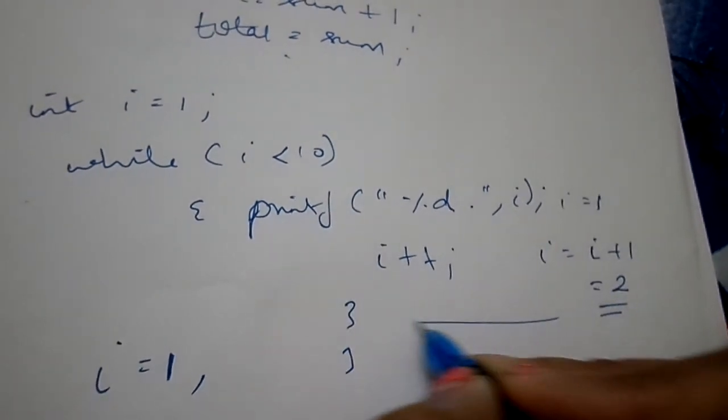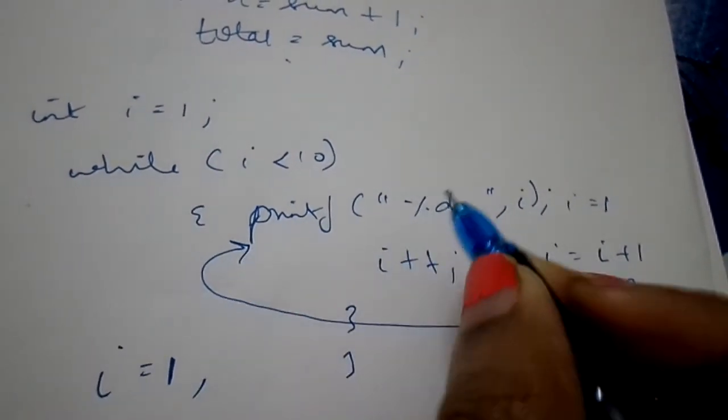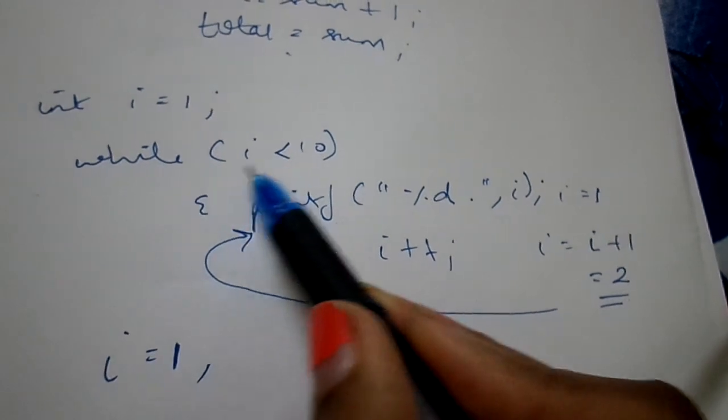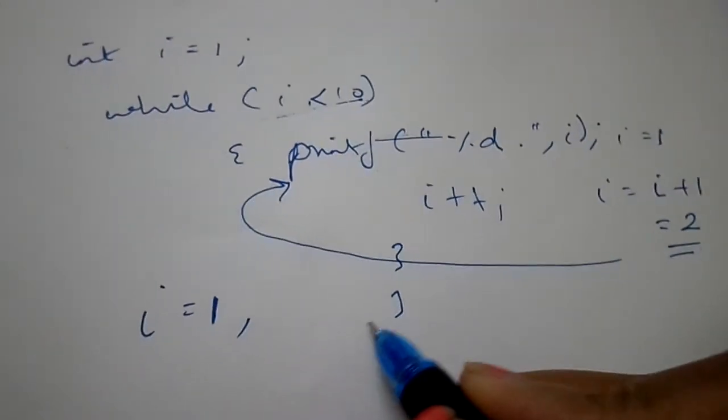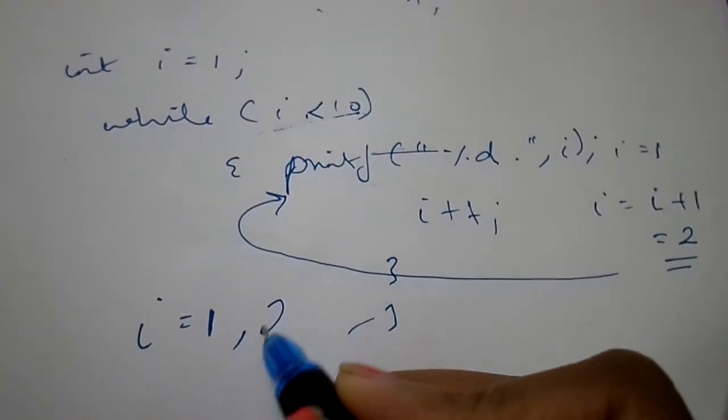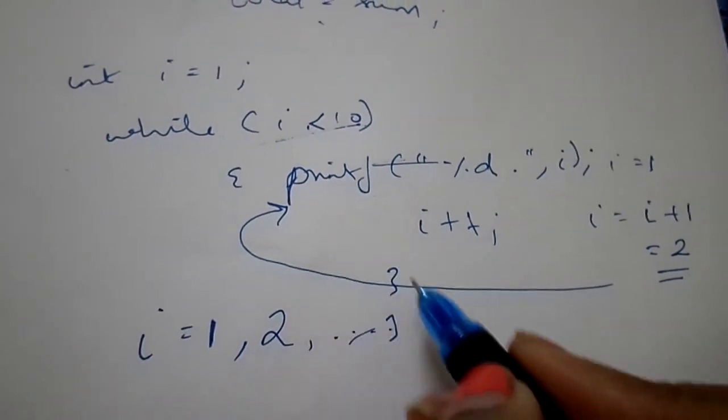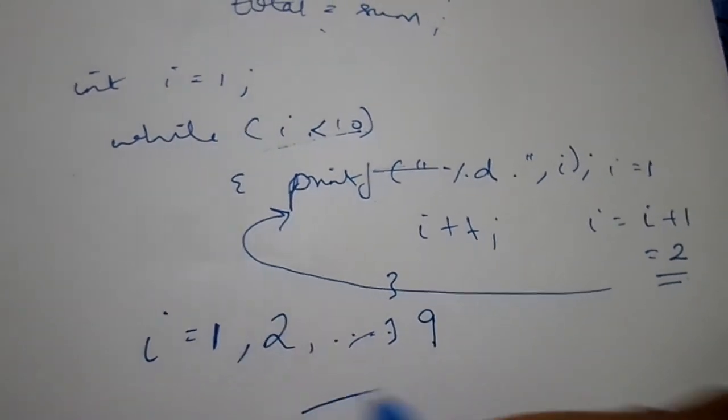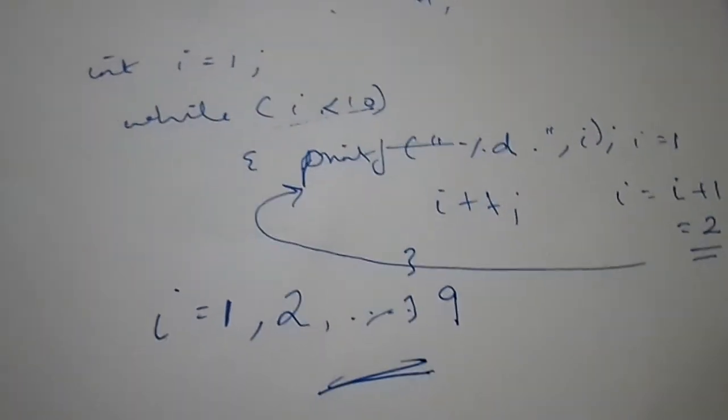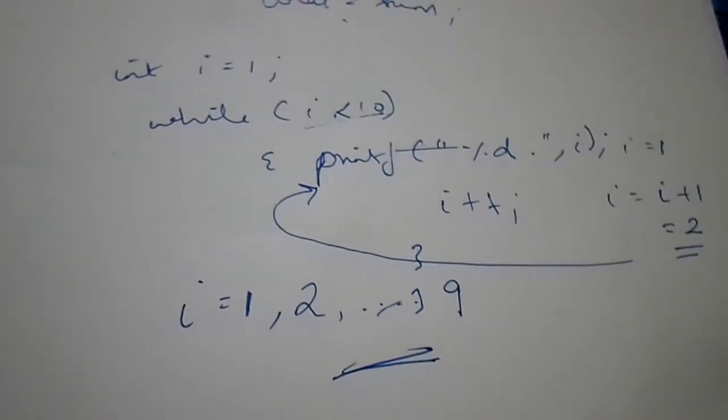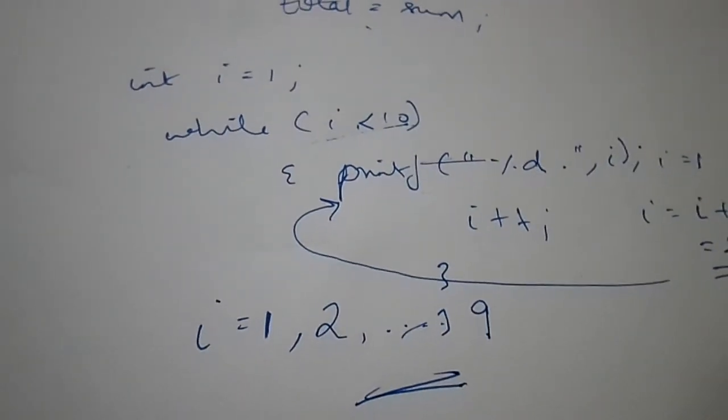So i = i + 1, which is equal to 2. Then it goes again back to the statement and checks the condition. If it is true, it prints and continues until the condition is satisfied, until it is less than 10. So this is the output of post increment.